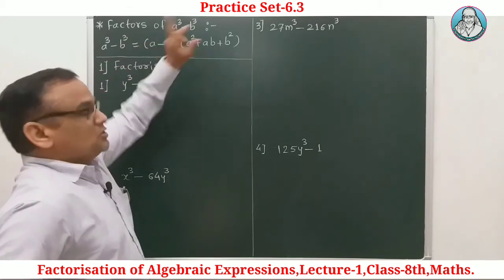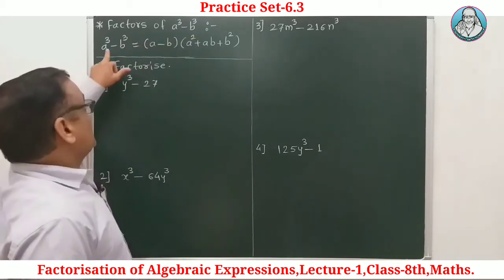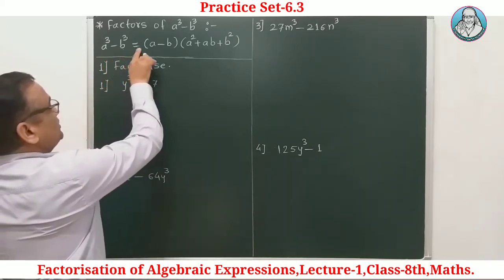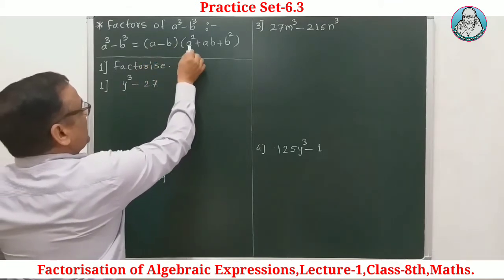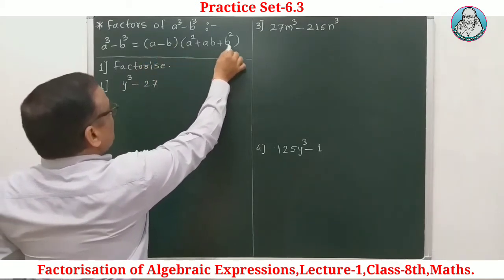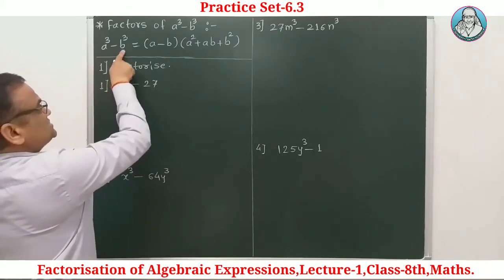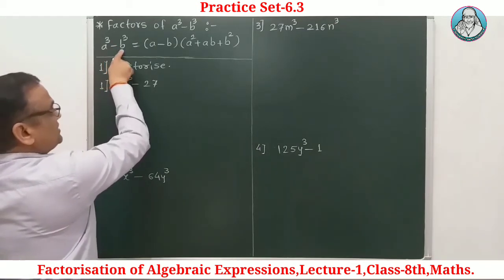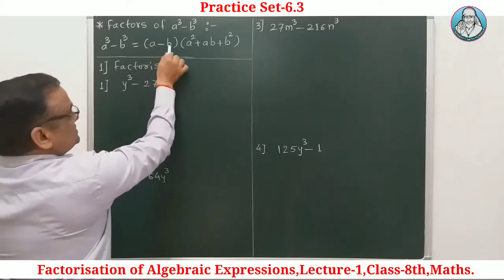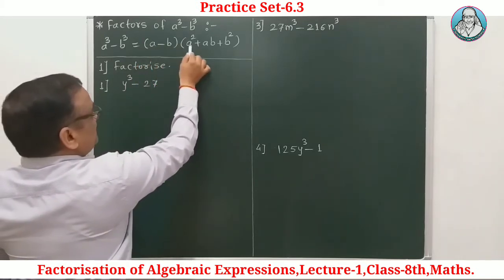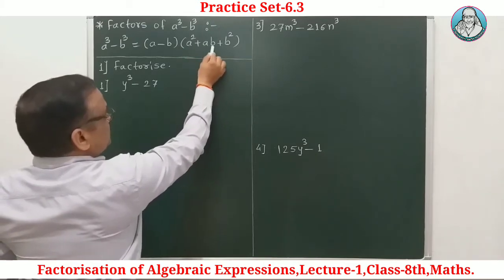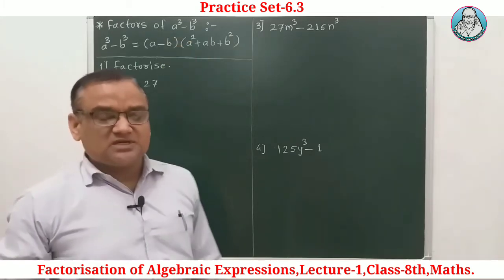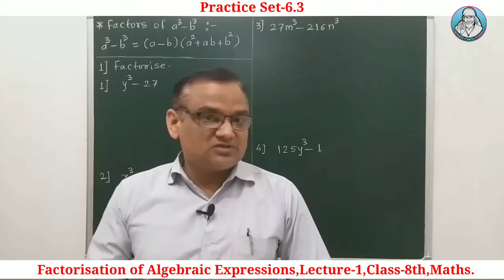We are going to learn factors of a cube minus b cube. The formula is: a cube minus b cube equals first bracket (a minus b), second bracket (a square plus ab plus b square). Here, a means the first term and b means the second term.